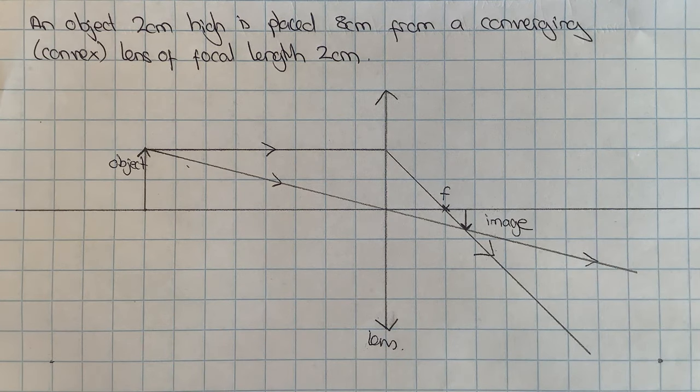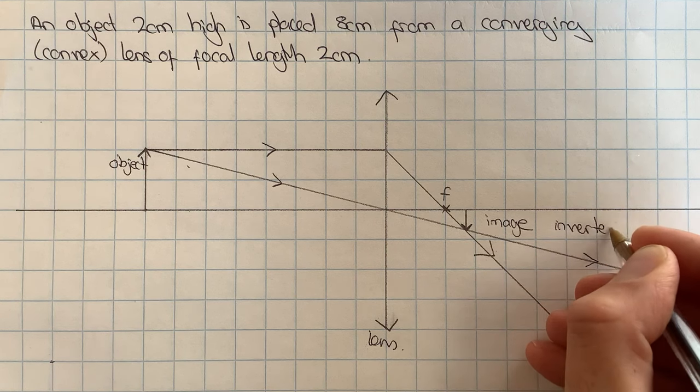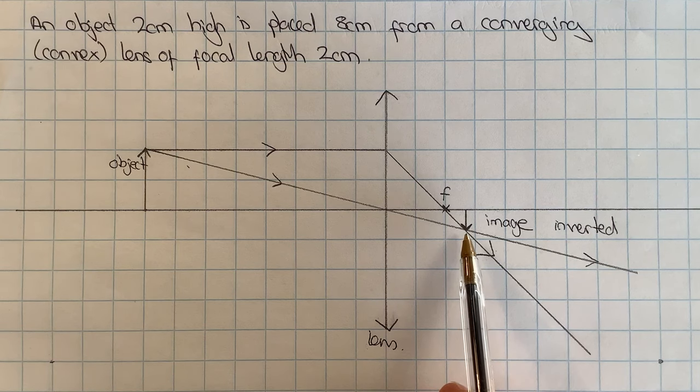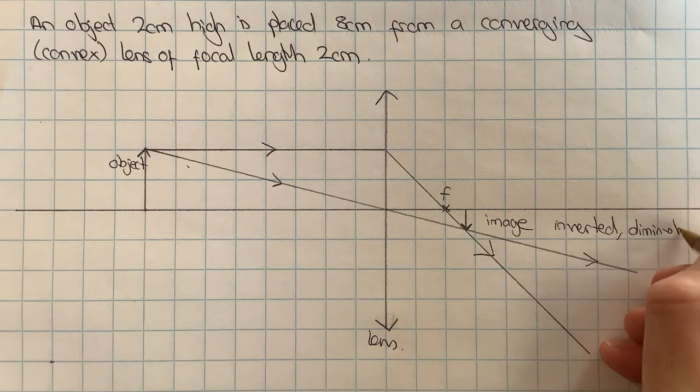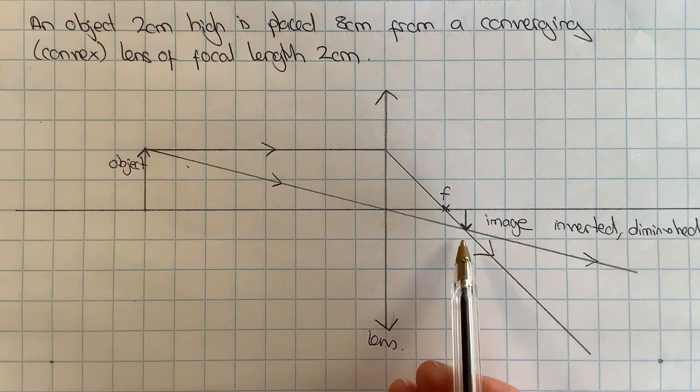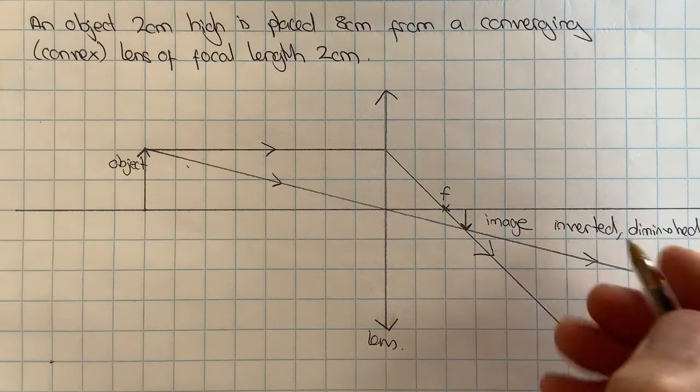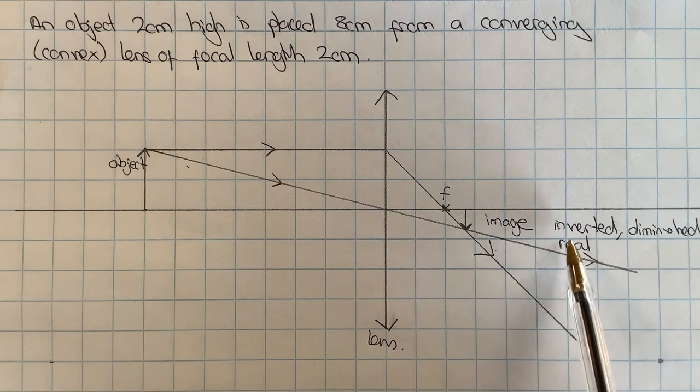Now I can see a few things from this diagram. One, I can see that my image is upside down, or we call that inverted. Two, I can see that it is smaller in height than the object, so that is diminished. And thirdly, I can see that the rays that cross to form it are real rays, which tells me it is a real image. So I've deduced from this that it's an inverted, diminished, real image.